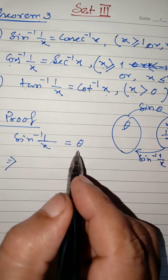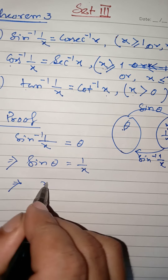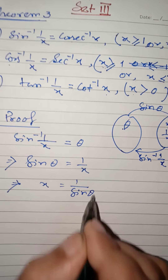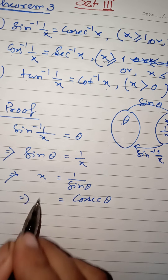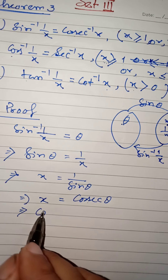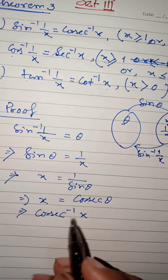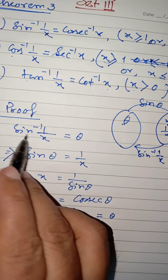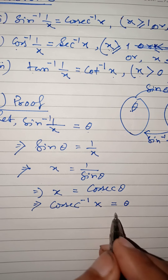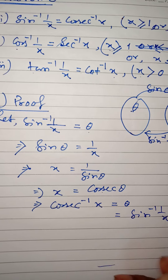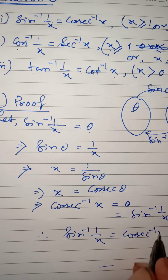Since sin inverse 1 by x = θ, and this is a one-one onto function, sin θ must equal 1 by x. Rearranging, x equals 1 by sin θ, and 1 by sin θ is nothing but cosec θ. So cosec θ equals x, meaning cosec inverse x gives output θ. But θ is nothing but sin inverse 1 by x. Therefore, sin inverse 1 by x is equal to cosec inverse x. Hence proved.